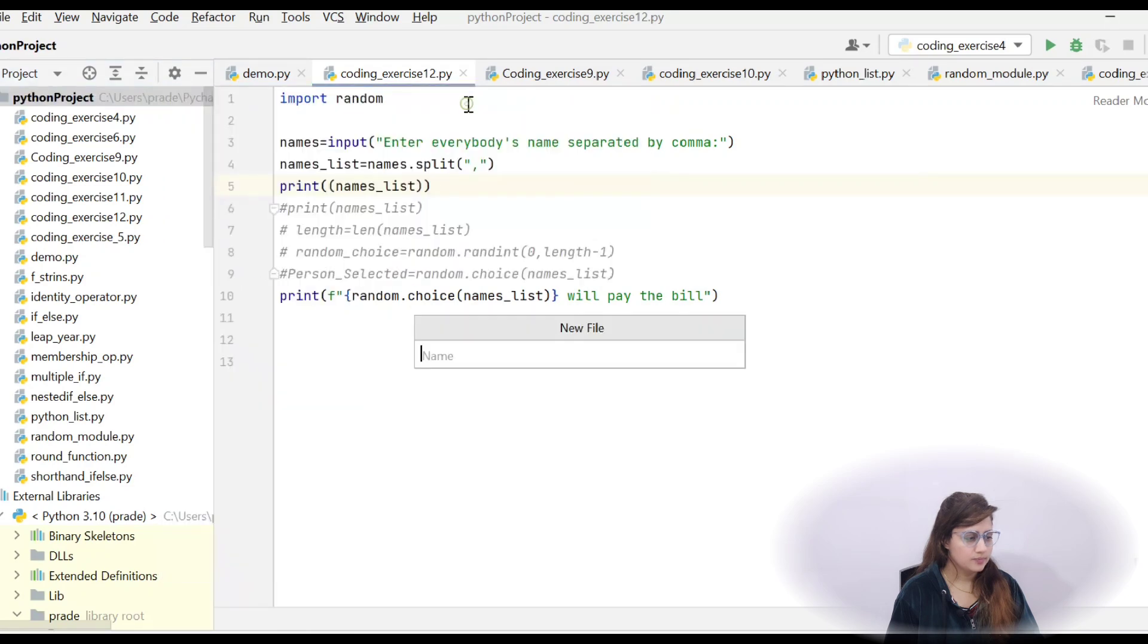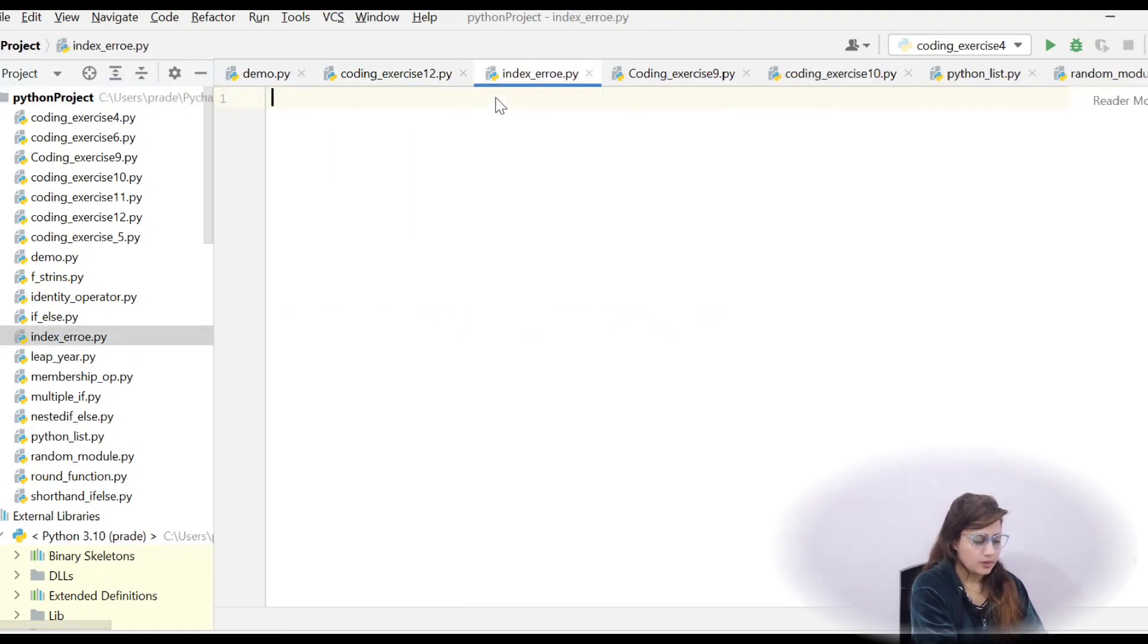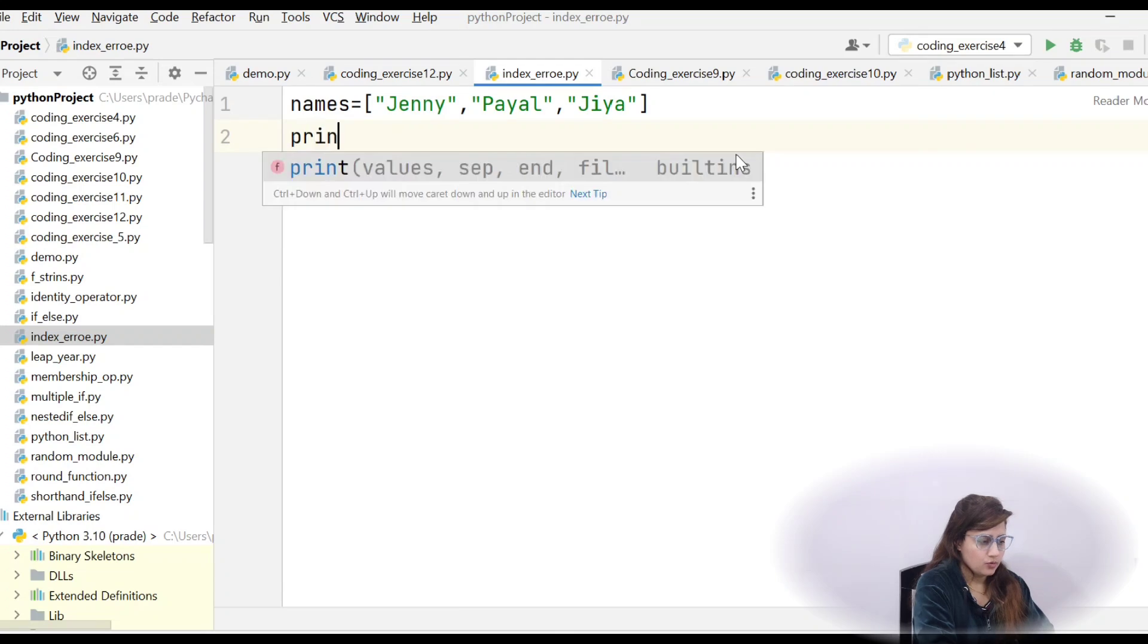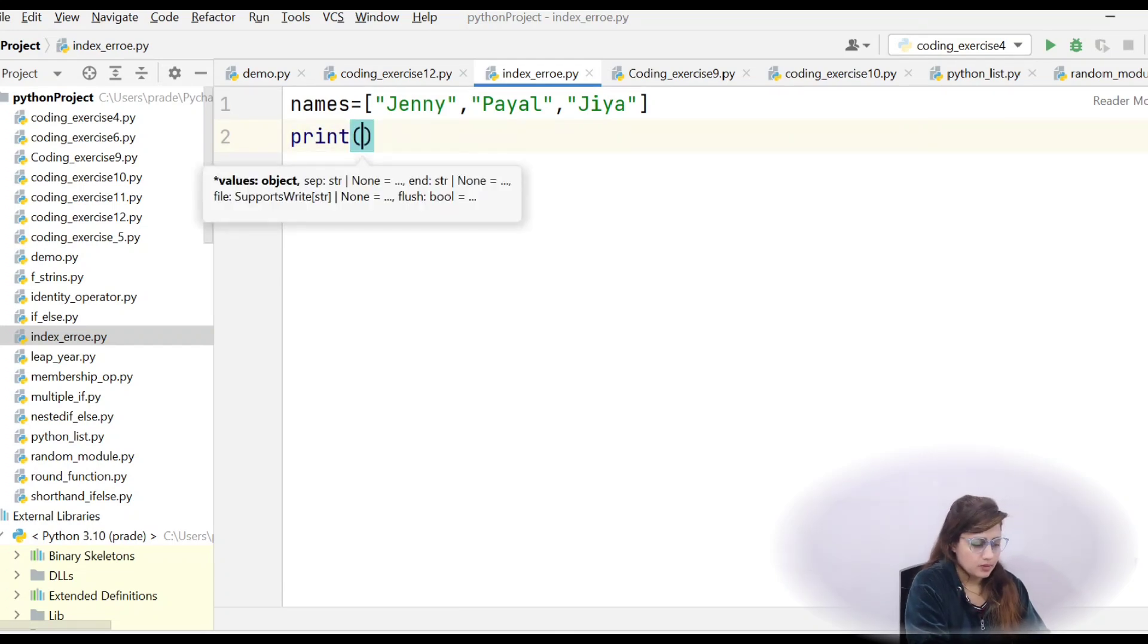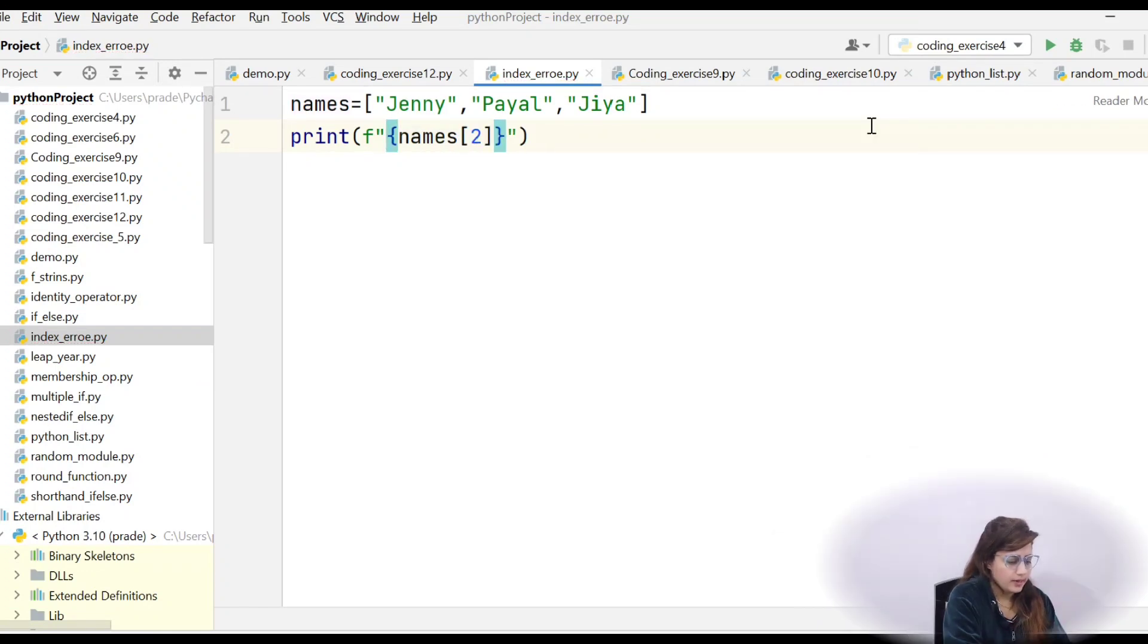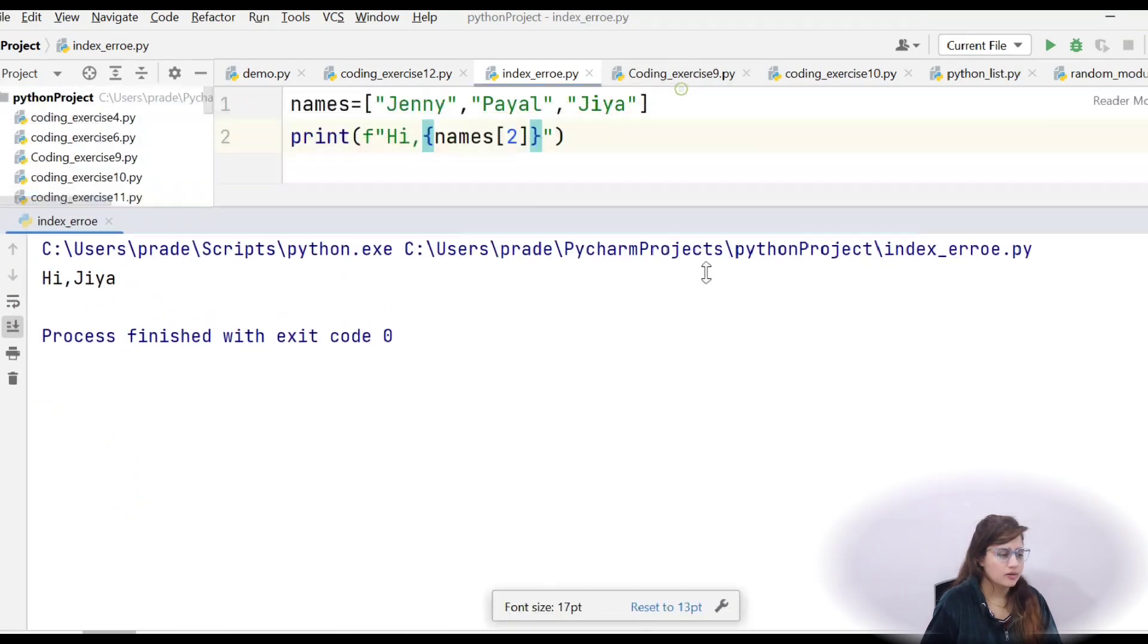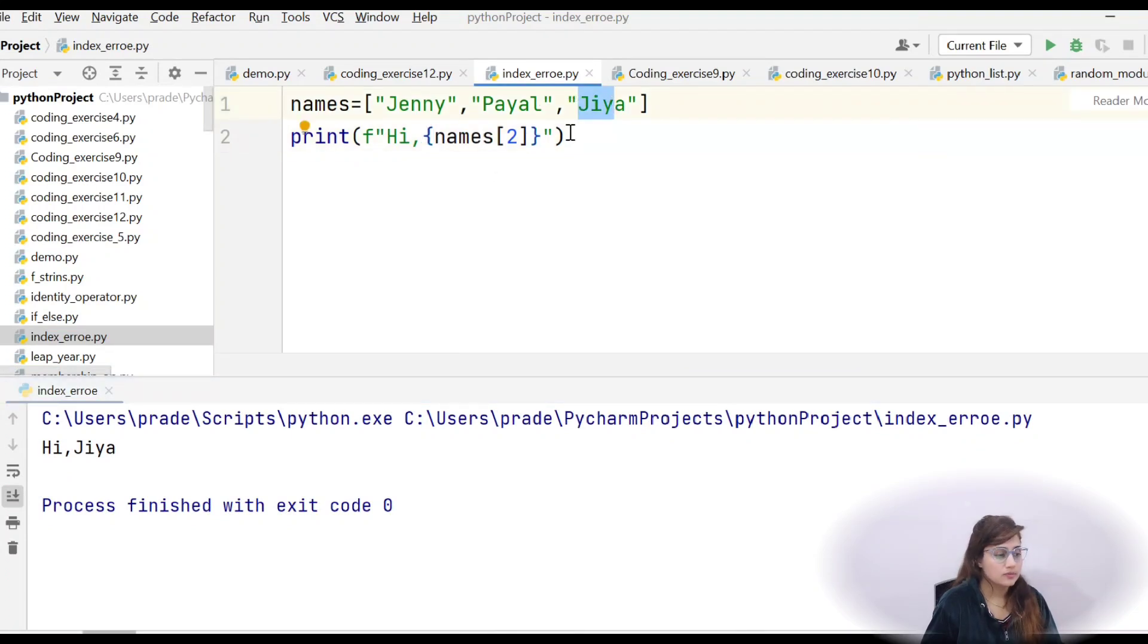So let's create a new file here. index_error.py. And simply we will make a list of names. So we have taken 3 elements. See, you can put these names into single quote also. In Python it is allowed. Now if I want to access like if I want to print something like this, directly using f string I am going to print. So I am printing names and at what index? Suppose index 1, index 2. And I am just saying hi to whatever is there at this index.